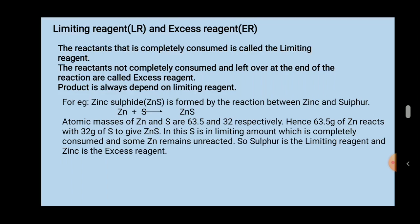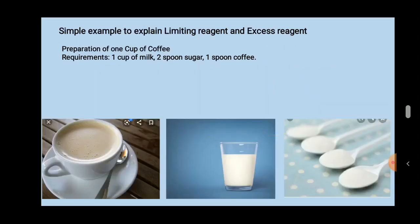Now an example is given here. Before explaining this, I will explain a daily life activity — a simple example to explain limiting reagent and excess reagent. You can see a picture: that is the preparation of one cup of coffee. How is coffee prepared? One cup of milk is required, two spoons of sugar, and one spoon of coffee powder. You can see in the picture: one cup of milk and two spoons of sugar.